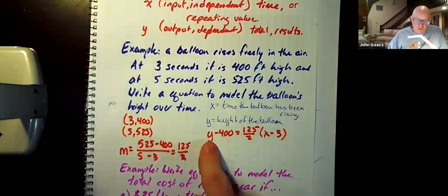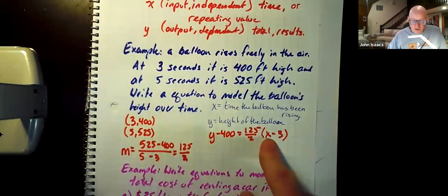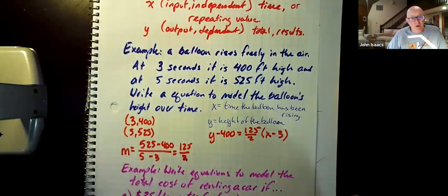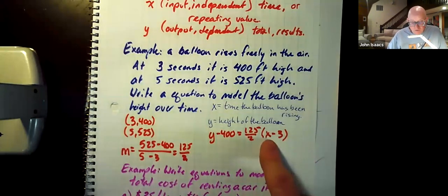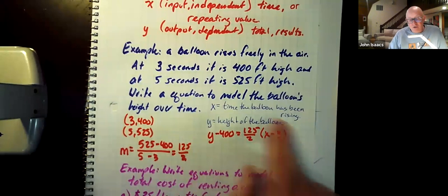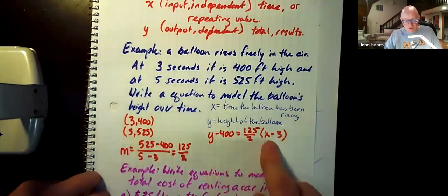Y will represent the height of the balloon over time. Whatever value you put in here for x, you'll find the height when you put in that value for x. For example, if you want to know where the balloon was at zero seconds, you could put a zero over here, and you'll find out that the height was probably not zero. But you can do that on your own. So let's go on to the next problem.